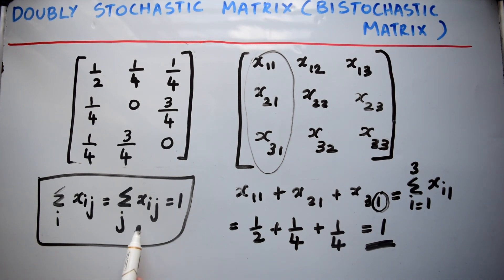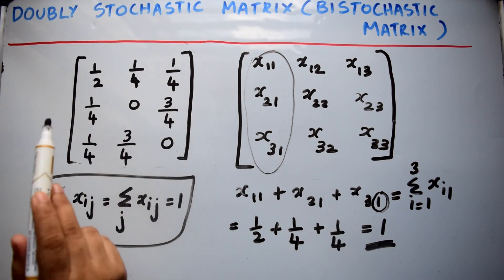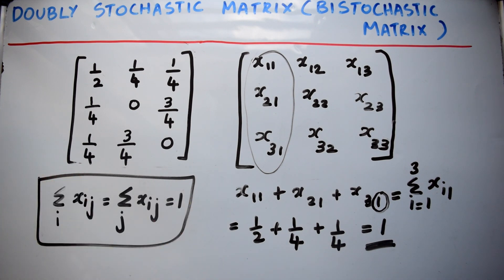Similarly, Σj xij = 1 means you are adding all elements in a row and you get the sum equal to 1. That is the condition for a doubly stochastic matrix.